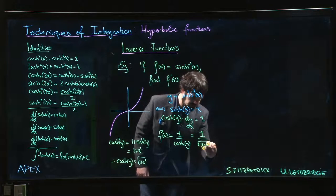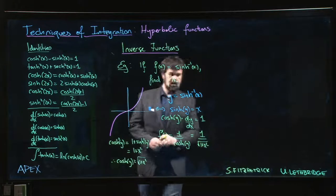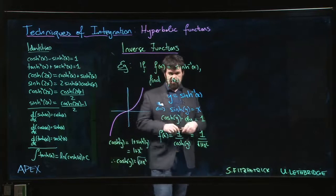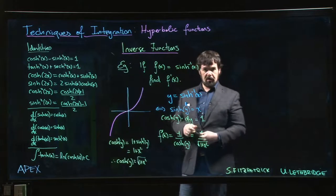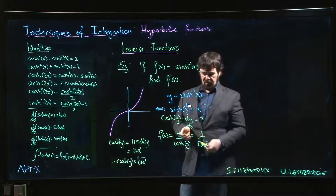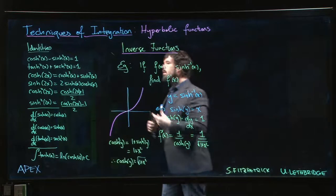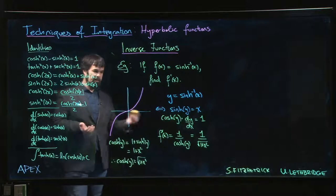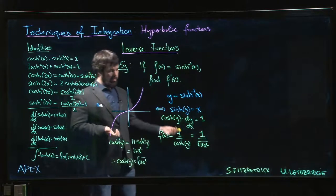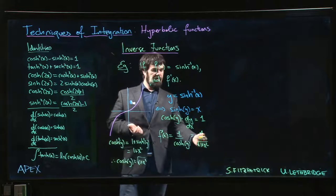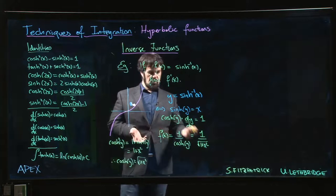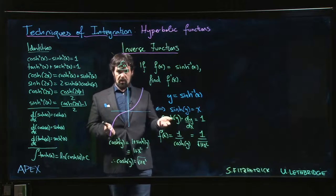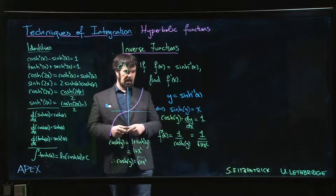So we get f′(x) = 1 / √(1 + x²). This hints at something: when doing trigonometric substitution, if you see the pattern 1 + x², you'd use a tangent substitution because the derivative of arctan gives 1/(1 + x²). This suggests another option — you could use a hyperbolic sine substitution rather than a tangent substitution and get similar results.